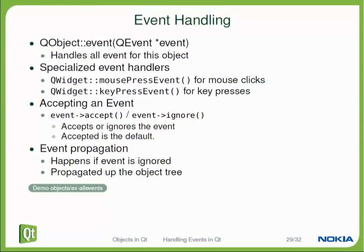The most generic event handler that Qt objects have is the method event() on QObject itself. It is called for all events that this object receives. You could technically process all events in that single function, but that is very inconvenient because there are many different events. Instead, we use specialized event handlers — for example, QWidget has event handlers for mouse press events, which is far more specific, and when your widget receives that event, this function will be called.